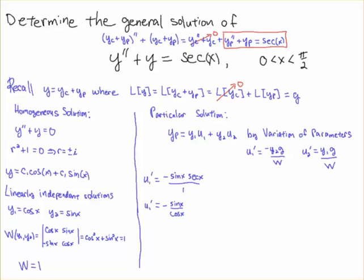So u1 primed is equal to minus sine times the secant, because that's y2, the sine found over here. And now I'm going to multiply that by g, and then it's over our Wronskian, which is one. The minus sign just comes from the application of the definition. Since the secant is one over cosine, I end up with minus sine over cosine. You might recognize it as a tangent, but I'm just going to leave it that way and integrate it.